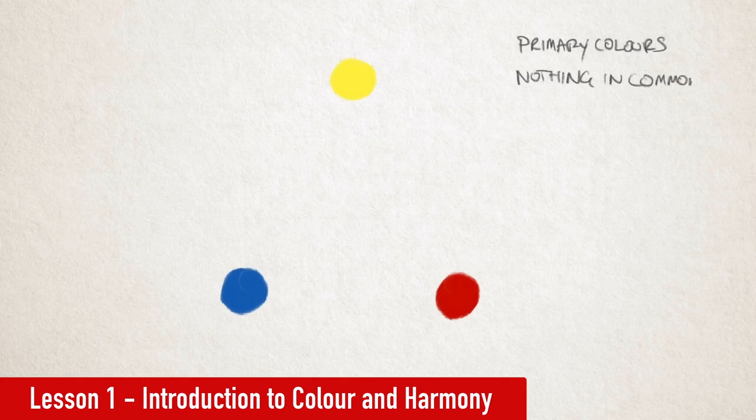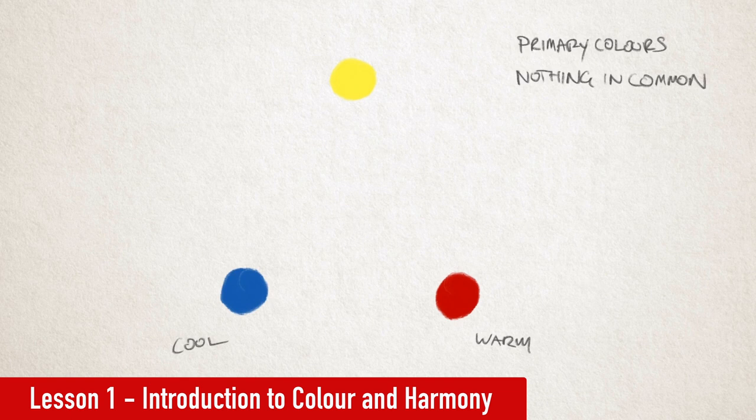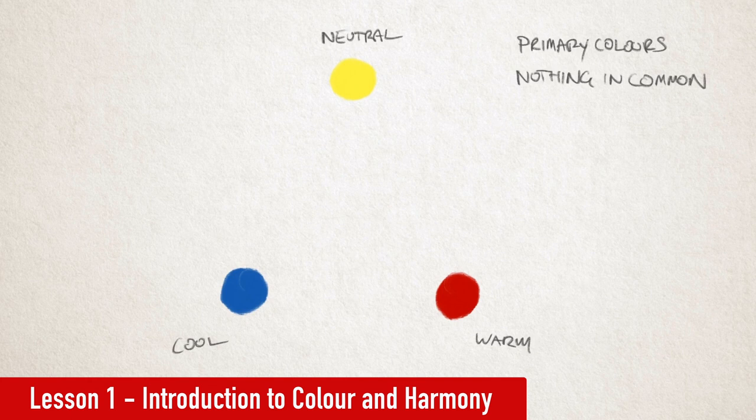These colors are impossible to create, which means the three of them have nothing in common. Blue sits on the cool side, red sits on the warm side, and yellow is neutral sitting somewhere in between the two temperatures. So nothing about these three colors relate to each other.